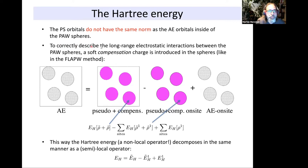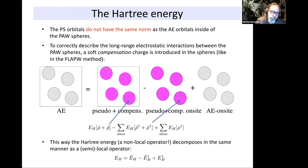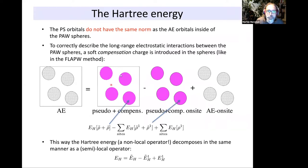That is a problem because to correctly describe long-range electrostatic interactions between the spheres, norm conservation would be necessary. Now, if the charge on the plane wave grid inside this area is not correct — if the moments, the first, second, and so on, moments of the charge density inside the sphere are not correct — then the electrostatic potential outside of it is not correct either. As soon as the local moments are correct, however, the potential outside the sphere is correct.